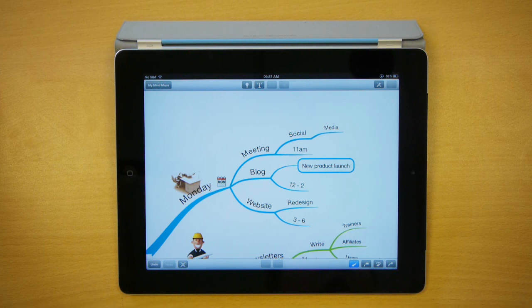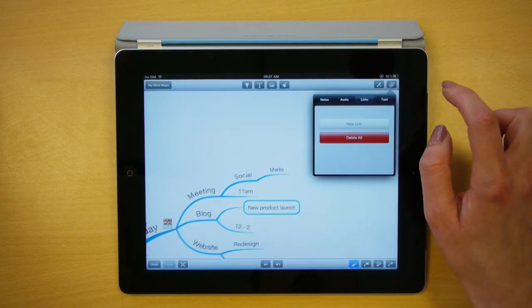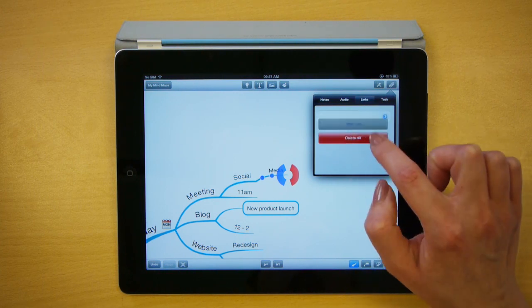To add a link to a web page to one of your branches, just select the branch, go to the attachments icon in the top right hand corner, make sure you're on the links tab, and select a new link.